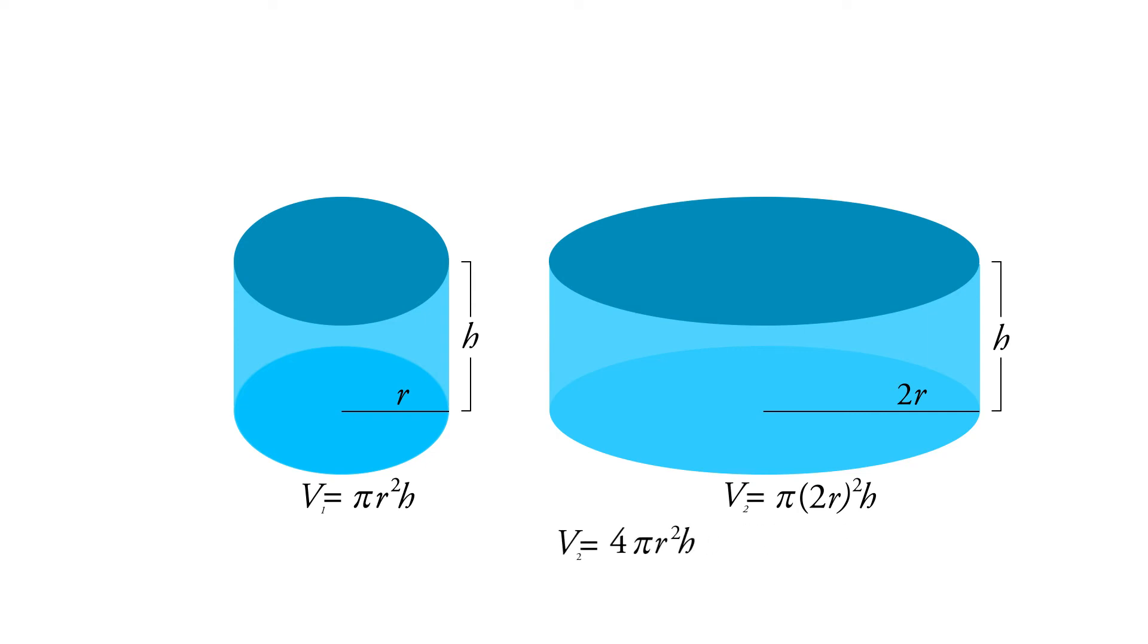And this here, pi r squared times the height, that's our original volume, that's our v1. So then we have v2 equals 4 times v1.